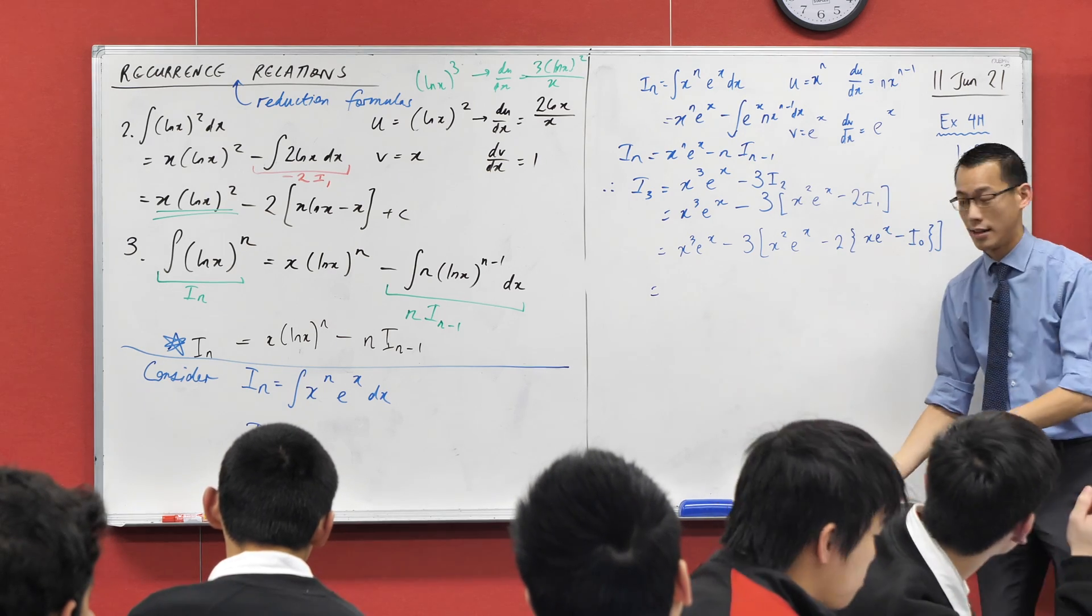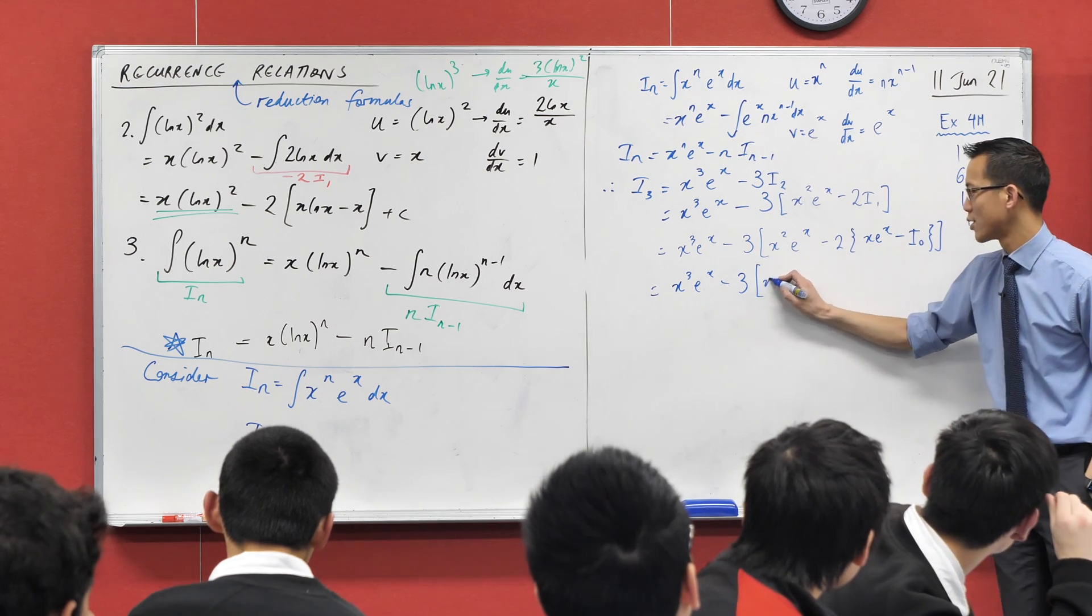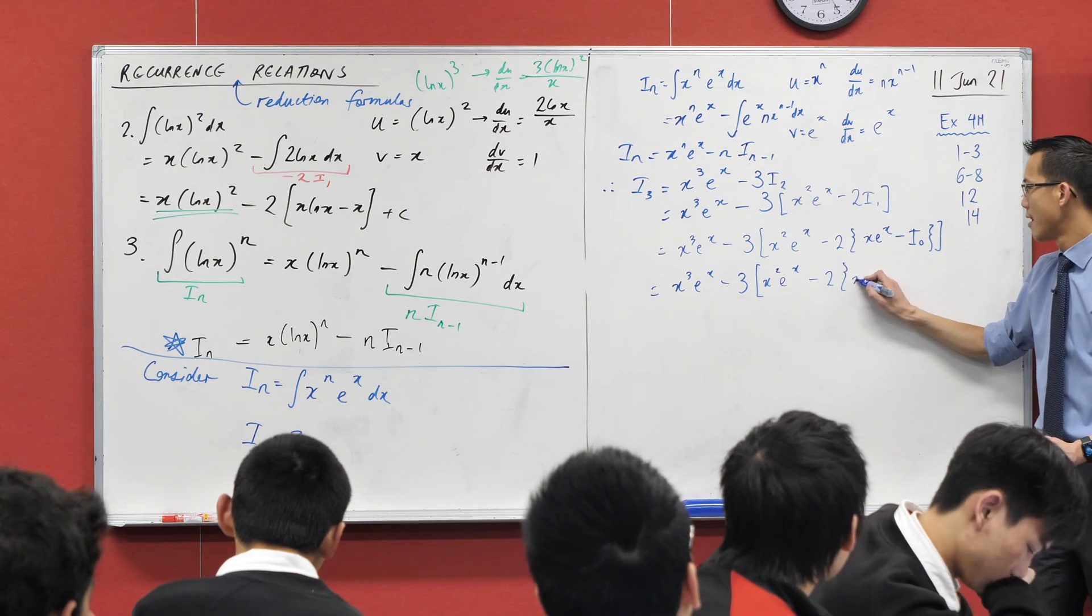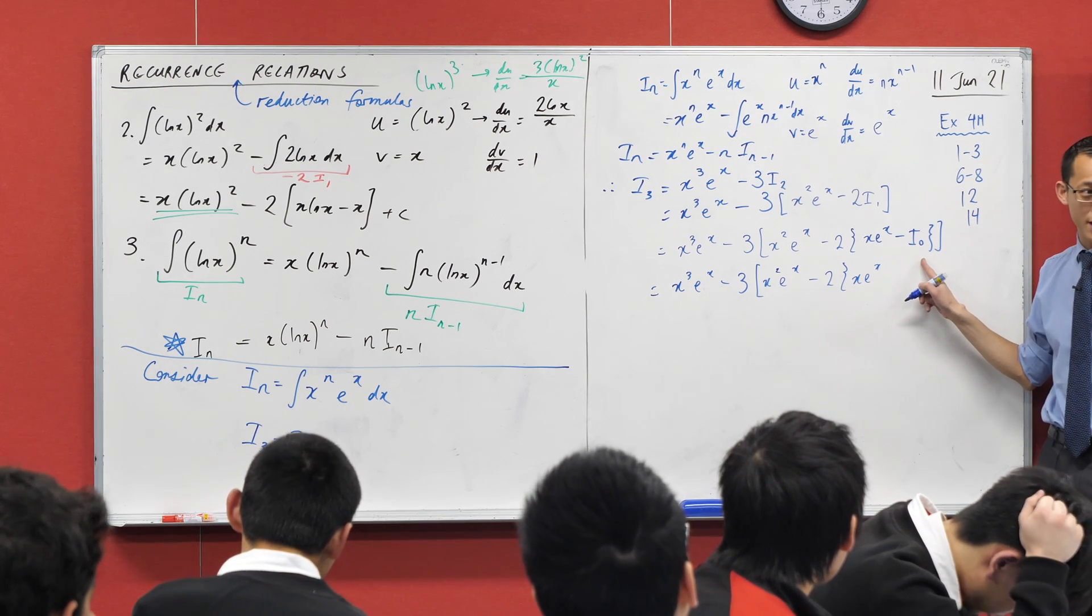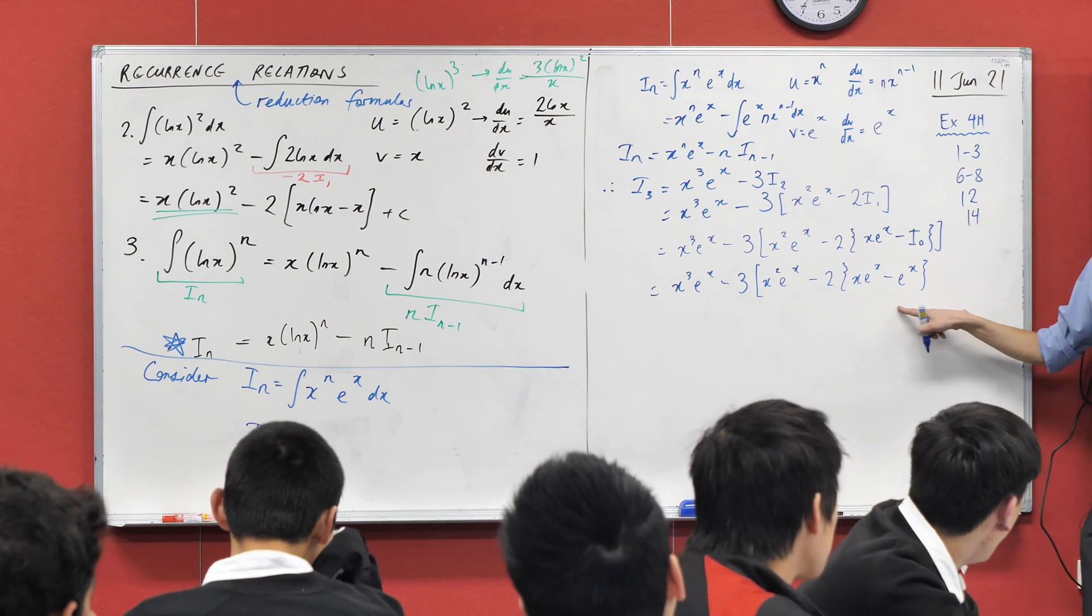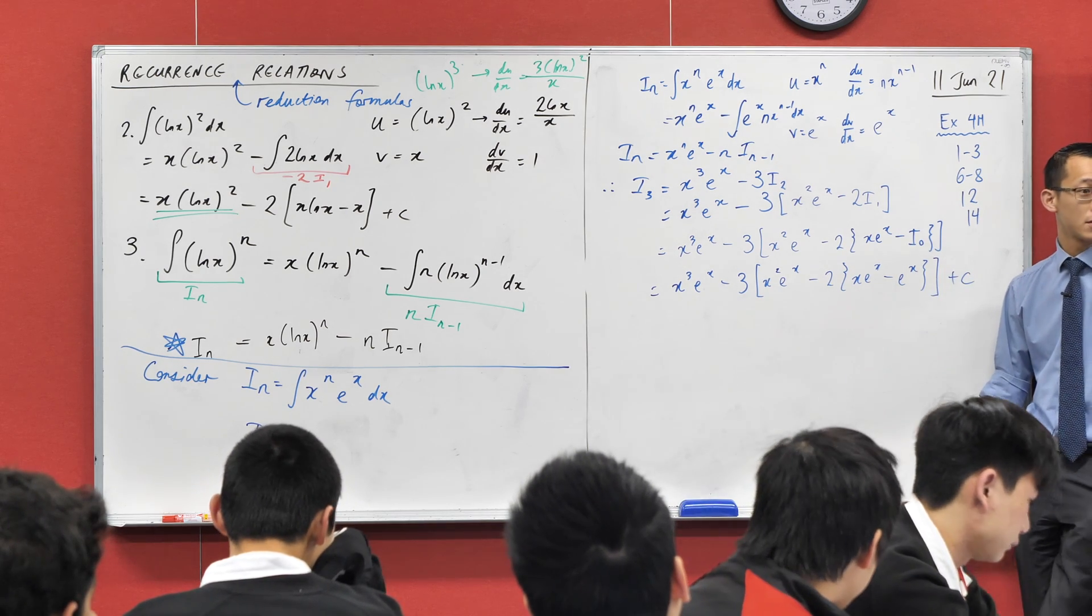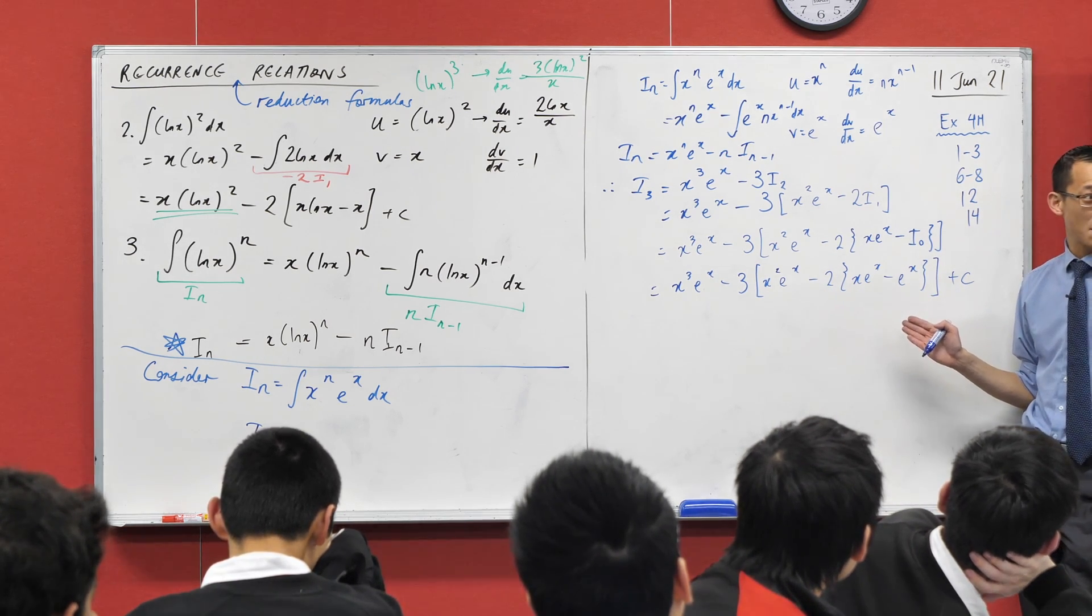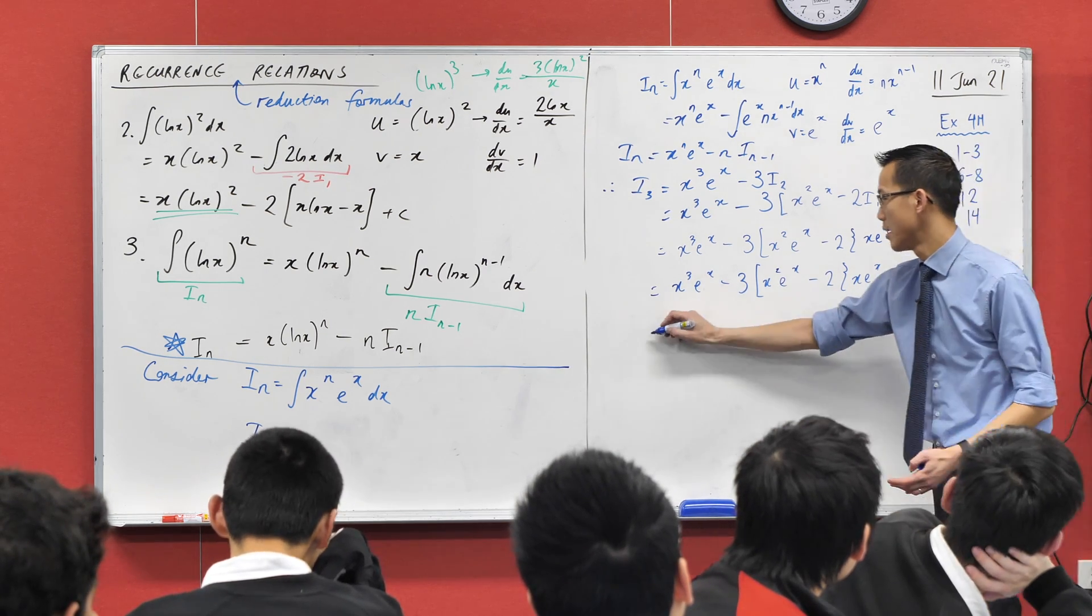Look back at where we began. Does i0 actually have a sensible definition? The answer is, it totally does. It's x to the power of 0, which is 1, e to the x, my favorite integral of all time. So therefore, I can say, I've climbed down to the bottom of the ladder. I can get off this thing now. x cubed e to the x, minus 3 lots of, and I am going to expand out all these brackets in a moment. x squared e to the x, minus 2, x e to the x. This thing here is the integral of e to the x, which is e to the x. Ta-da!